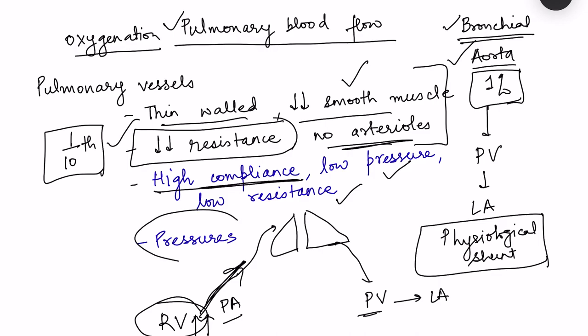Comparing pressures in pulmonary versus systemic circulation: pulmonary circulation has a systolic pressure of 25 mmHg and diastolic of 8 to 10 mmHg, compared to systemic pressures of 120/80. The mean pulmonary arterial pressure is just 15 mmHg. Capillary hydrostatic pressure is also very low, ranging from 7 to 10 mmHg.